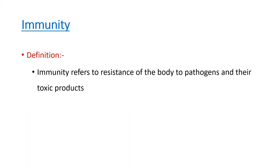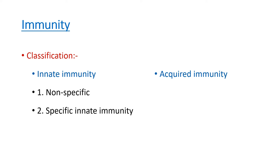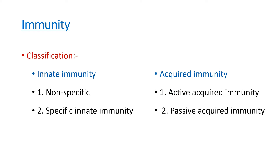To start your answer, begin with the definition of immunity. Immunity refers to the resistance of the body to pathogens and their toxic products. For classification: immunity can be classified as innate immunity and acquired immunity. Innate immunity can be further classified as non-specific innate immunity and specific innate immunity. Acquired immunity can be classified as active as well as passive.